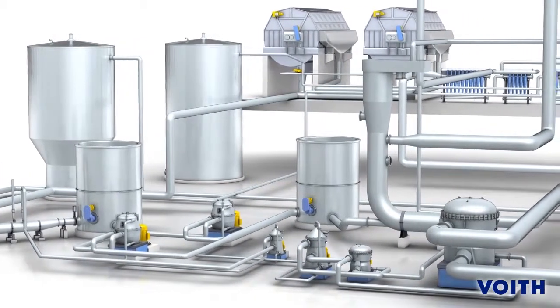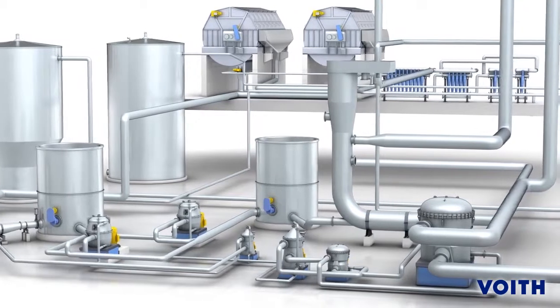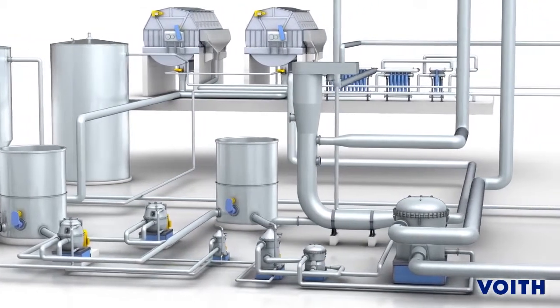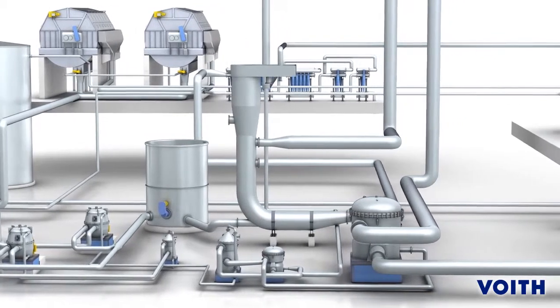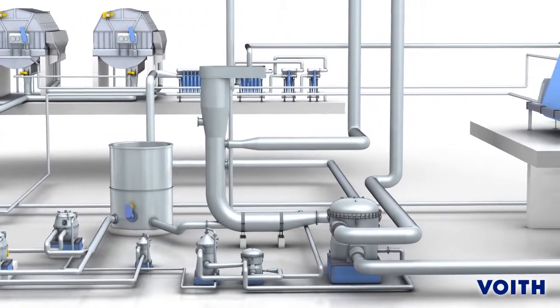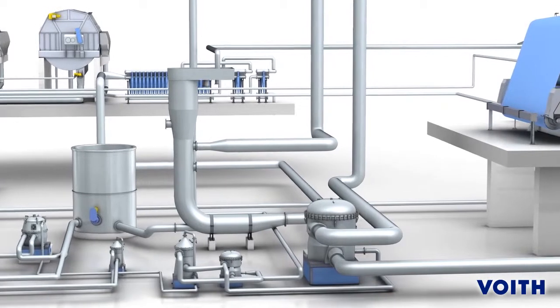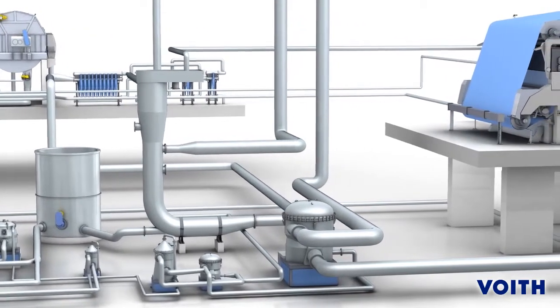In paper production, the dosing system used to feed chemicals and additives into the process is a key component. The method of dosing not only influences the effectiveness of the chemicals used, but also has a substantial impact on the efficiency of the paper production process.